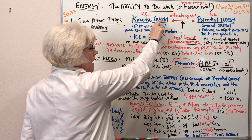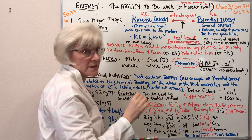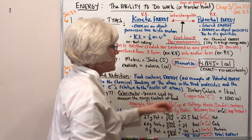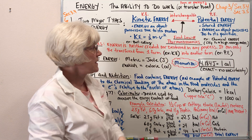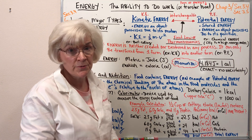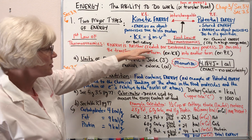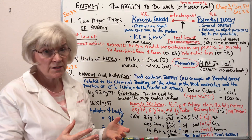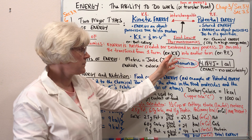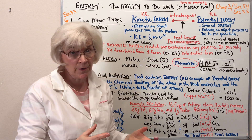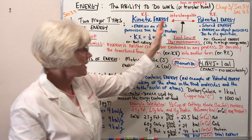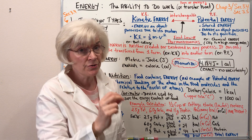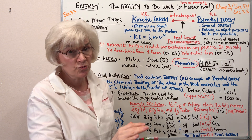That arrow means it's possible to take kinetic energy and convert it into potential energy, or potential energy and convert it into kinetic energy. This illustrates the first law of thermodynamics, which states that energy is neither created nor destroyed in any process. It can only be transferred from one form — for example, kinetic energy — into another form, such as potential energy. You can convert between forms of energy, but you do not create or destroy energy.